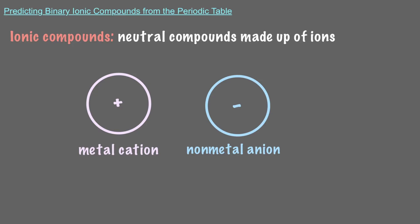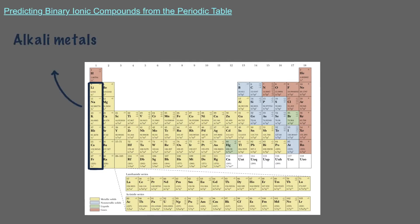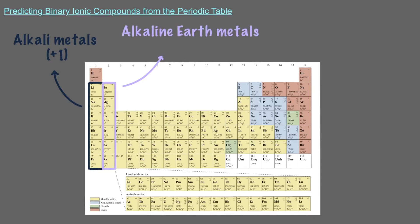Depending on your location in the periodic table, some metals and nonmetals always make the same ions. Elements in group 1 of the periodic table, also called alkali metals, always make cations with a positive 1 charge. Similarly, elements in group 2 of the periodic table, also called alkaline earth metals, always make cations with a positive 2 charge.